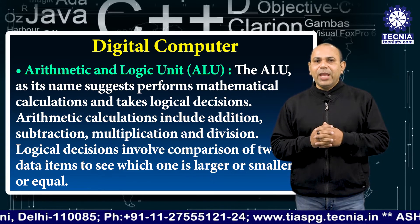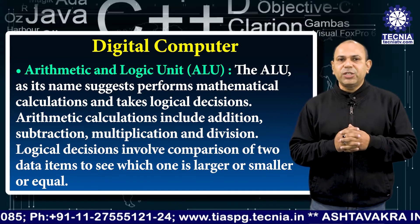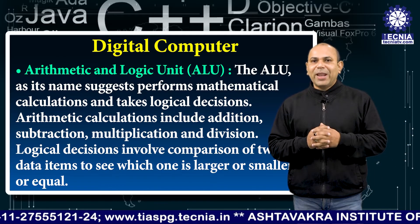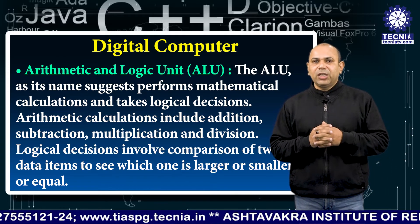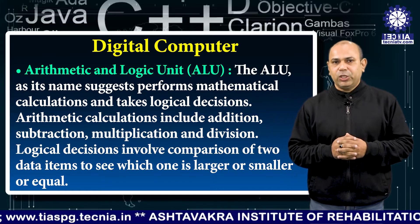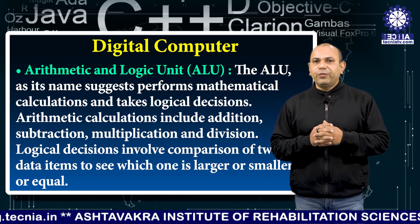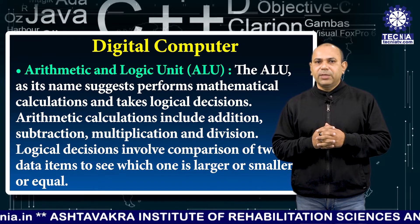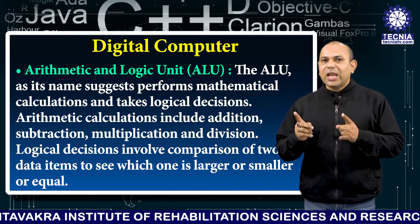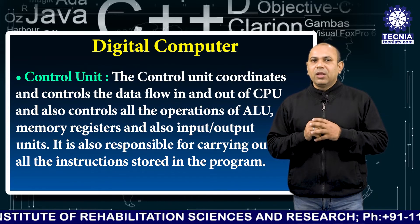The arithmetic logic unit, that is ALU, as its name suggests, performs mathematical calculations and takes logical decisions. Arithmetic calculations include addition, subtraction, multiplication, and division. Logical decisions involve comparison of two data items to see which one is larger, smaller, or equal.